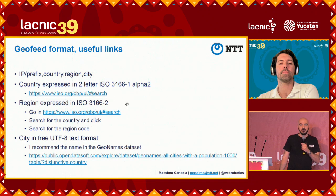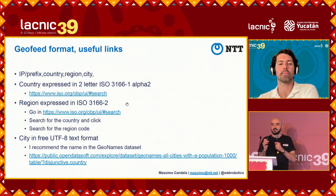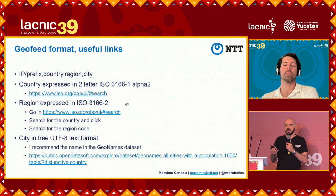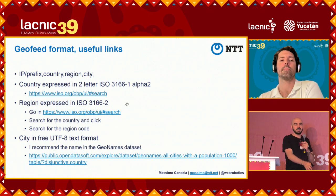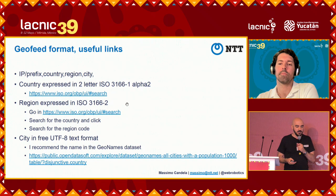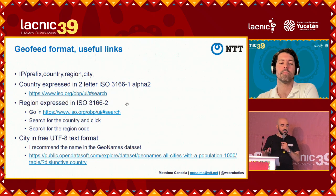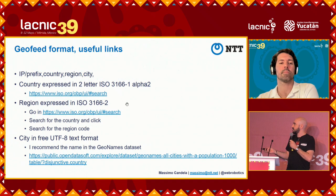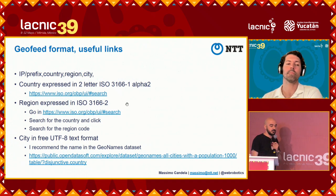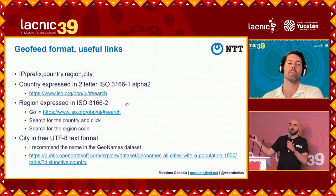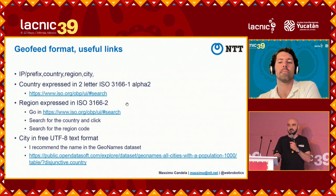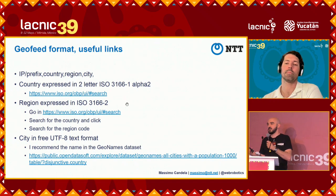The geofeed file format is already supported by all geolocation providers and has been used for years to exchange location data. Before RFC 9092, it was done by sending emails or uploading files manually. You must respect the standard: correct ISO country codes, region codes, and city names. You can find country codes, region codes, and city names on iso.org. Please do not invent your own country codes — at the moment more than 5% of geofeed files use clearly invented country codes.